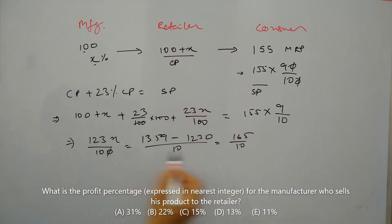So the value of X will be 1650 divided by 123.